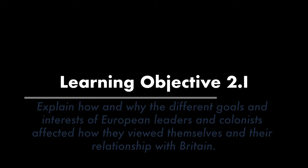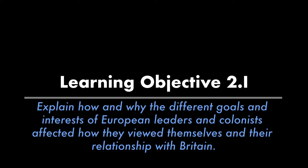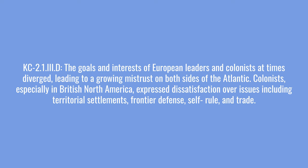The second learning objective in this lecture is to explain how and why the different goals and interests of European leaders and colonists affected how they viewed themselves and their relationship with Britain. The first key concept in this learning objective is that the goals and interests of European leaders and colonists at times diverged, leading to growing mistrust on both sides of the Atlantic. Colonists, especially in British North America, expressed dissatisfaction over issues including territorial settlements, frontier defense, self-rule, and trade.